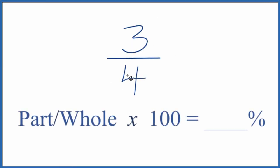Let's write the fraction 3 fourths as a percent. So to change the fraction to a percent, we take the part, that's the 3, we're going to divide that by the whole here, that's the 4, then we multiply by 100. That'll give us our percent.